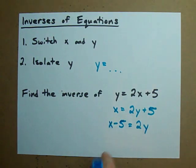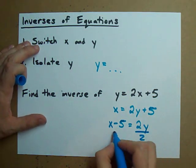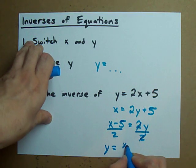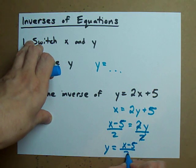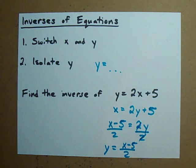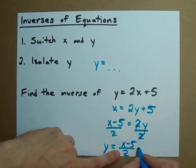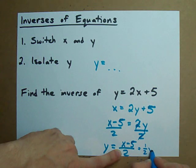Now to get rid of the 2, you divide both sides by 2, and what you're left with is y equals x minus 5 over 2. Now your teacher may prefer you to break that up and write it as one-half x minus 5 over 2.